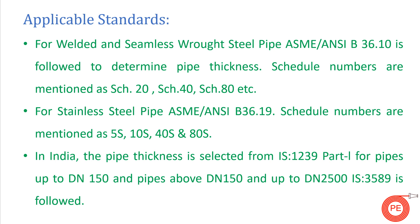What are the applicable standards? For welded and seamless wrought steel pipe, ASME B36.10 is followed to determine the pipe schedule number. For stainless steel pipe, ASME B36.19 is used. The difference is that schedule numbers for stainless steel pipes are followed by the letter 'S'. So if you see a schedule number with an 'S' suffix, it refers to stainless steel pipe referenced from ASME B36.19.